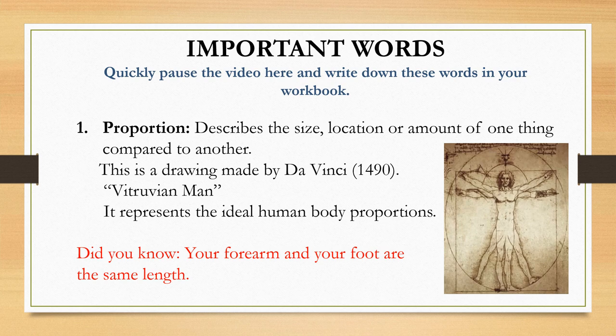Let's quickly look at important words. Pause the video here and write down these words in your workbook. Number 1: Proportion. This describes the size, location or amount of one thing compared to another. This is a drawing made by da Vinci in 1490 — the Vitruvian Man. It represents the ideal human body proportions. Did you know your forearm and your foot are the same length?